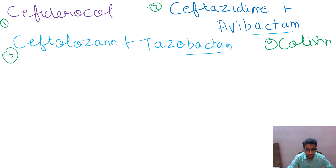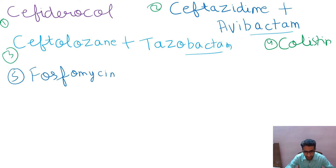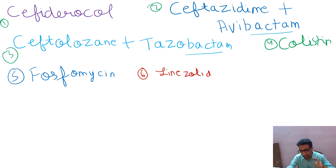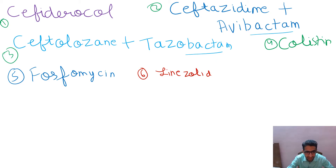Then fosfomycin. Colistin, fosfomycin, linezolid. Linezolid makes lines in the thrombocytes, so thrombocytopenia or thrombocytosis — the side effect of linezolid we are really afraid of. Do let me know in the comment section. If we want a therapeutic alternative, it can be tedizolid, but again these all are strictly reserved.